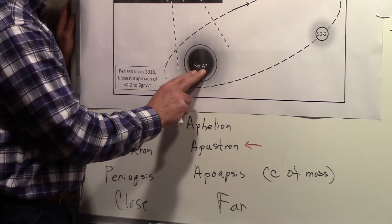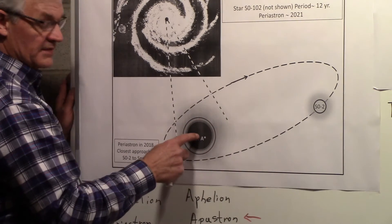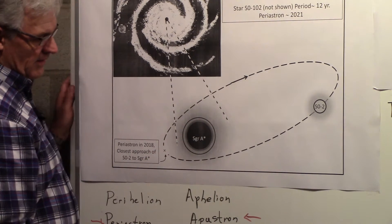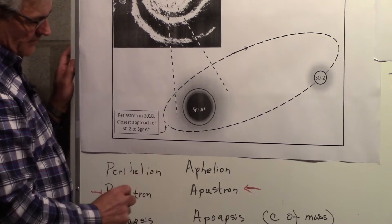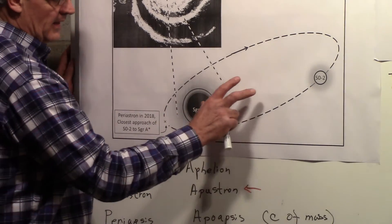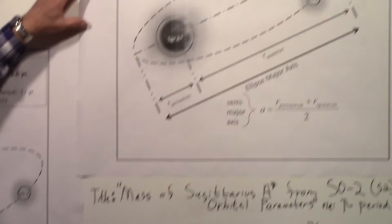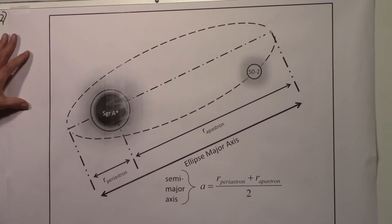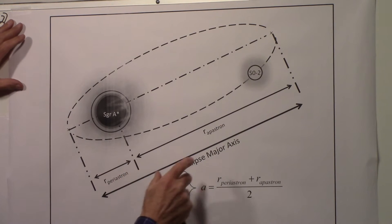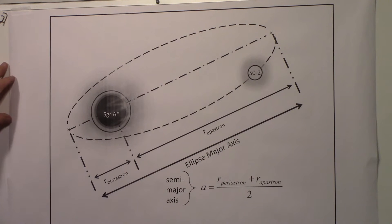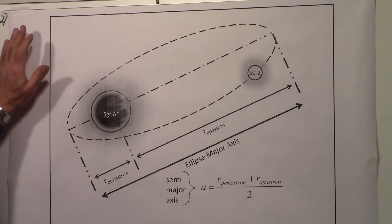Sagittarius A*, the supermassive black hole, is so massive that the center of mass of the system can be considered to be at the center of mass of Sagittarius A*. So we'll use the terms periastron for the closest point and apastron for the furthest point. What we're showing now are those two distances — periastron and apastron. The other parameters we're not going to need; we just need those two distances.